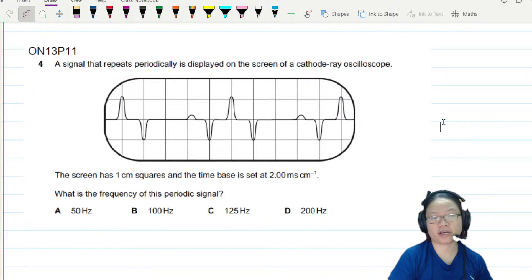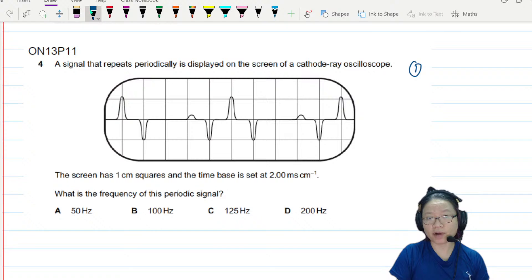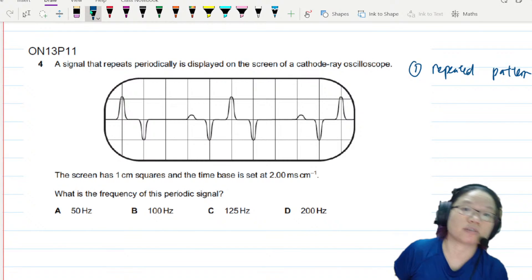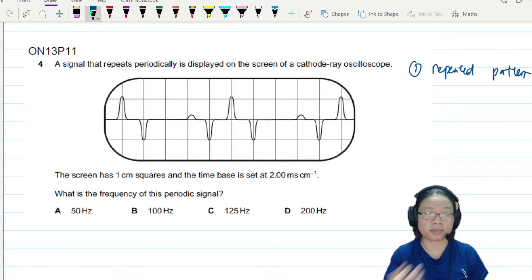Okay, this is a screen of the cathode ray oscilloscope. Treat this like a graph. When it comes to a graph, the first thing you should do is find the repeated pattern. Sometimes the repeated pattern is very obvious, like a sinusoidal curve, but sometimes it's a bit hard to see like this one.